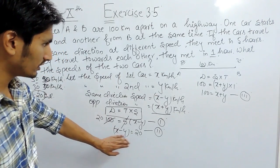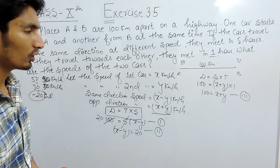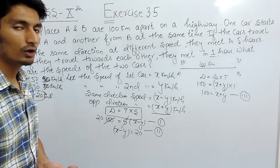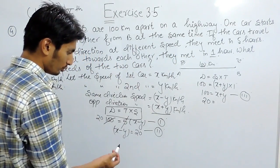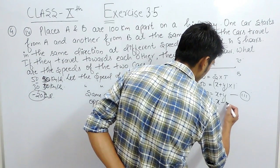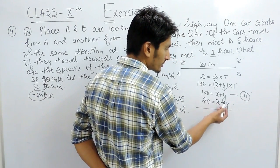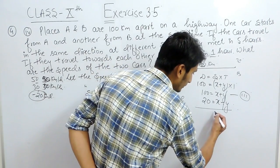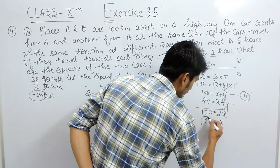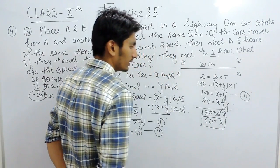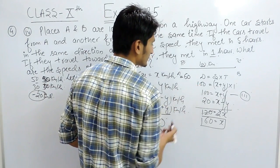Now we have two equations: x plus y = 100 and x minus y = 20. We solve them by elimination — adding the two equations cancels out y. This gives 2x = 120, so the value of x is 60. The speed of the first car is 60 km per hour.